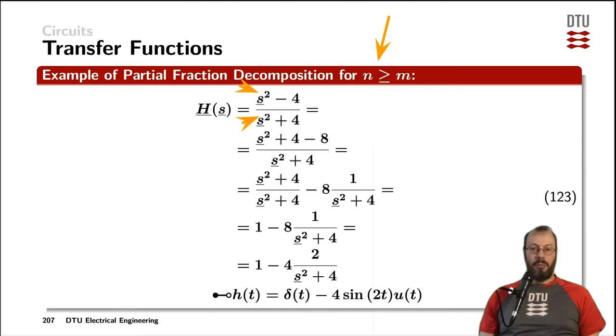Now here we can do a little mathematical rewriting and express minus four as the numbers plus four minus eight over here. And therefore, we can rewrite the fraction into two fractions: one is s squared plus four divided by s squared plus four, and the other one is the rest from above.